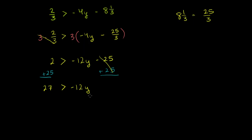To isolate y, we can either multiply both sides by negative 1/12 or divide both sides by negative 12. Because I'm multiplying or dividing by a negative number, I need to swap the inequality. Dividing both sides by negative 12: 27 over negative 12 is less than — I'm swapping the inequality — negative 12y over negative 12. When I divide both sides by a negative number, I swap the inequality; greater than becomes less than.